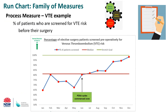For this VTE project, we'll now look more closely at the different measures — outcome, process, and balancing. This first chart is a process measure looking at the percentage of elective surgery patients screened preoperatively for VTE risk. The desired direction of this chart is up. The median is around 82%. There were lots of PDSA cycles done in June, which resulted in an upward trend, so the team is happy with this result.